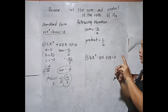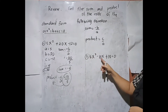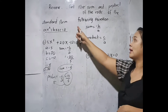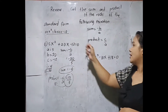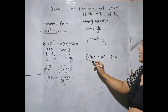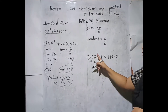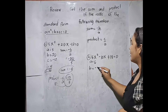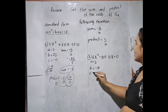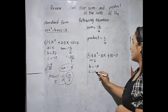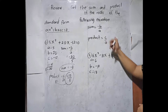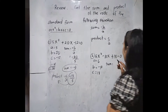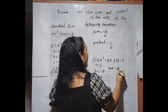Next, number 2: given 6x squared minus 10x plus 18. It is already in standard form, so it is arranged. So a is 6 (yung may x squared), b is negative 10, and then c is 18. Using this formula, sum equals negative b over a.